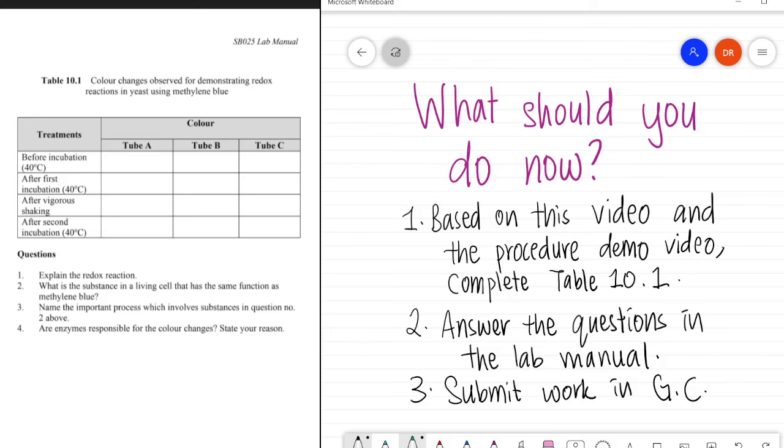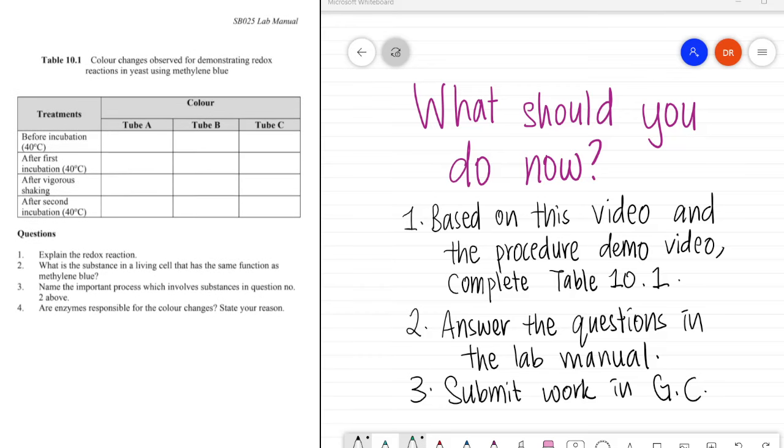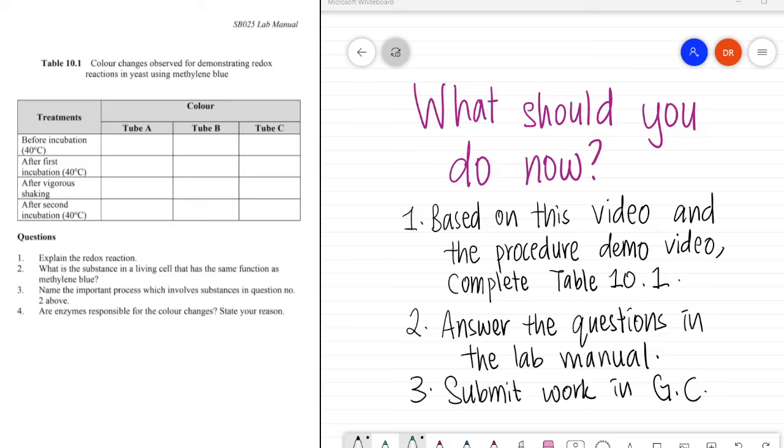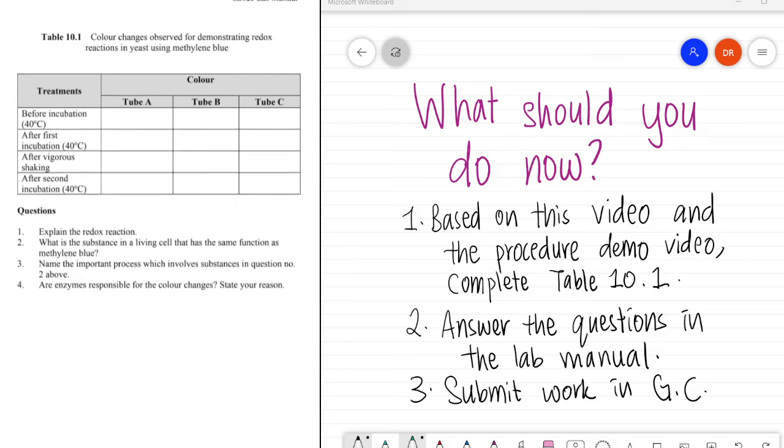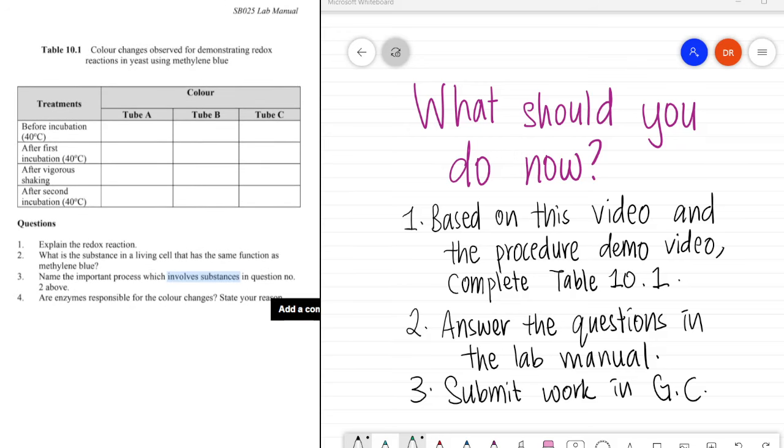The part that you need to write down is this part. So, what you should do now is, based on this video and on the procedure demonstration video that I tell you to watch in BioKML's YouTube, I want you to complete this table 10.1. Color can be white or blue. And then I want you to answer these questions in the lab manual. So, you can do this on a piece of paper. You can also do this digitally. It's up to you as long as you write down the answers somewhere. And then submit that work through the Google Classroom. And I will prepare a slot for you to submit your work.